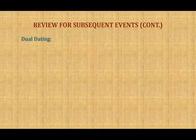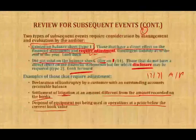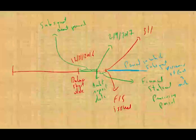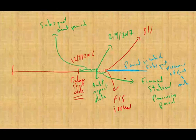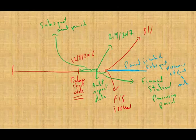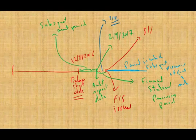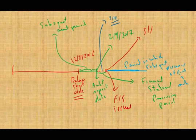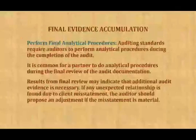Let's now talk about dual dating. Dual dating applies when the auditor has signed the report but something occurs before the financial statements are issued. Going back to the Amazon example: the balance sheet date was December 31st, the audit report was dated February 9th, and the financial statements were not issued until March 1st. Let's assume something happened on Valentine's Day — February 14th. Amazon bought another subsidiary. How do we deal with this event? It occurred after the field work and after the audit report date, but before the financial statements were issued.